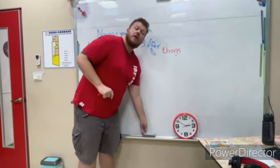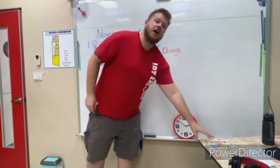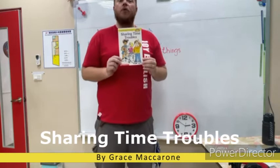So we have our three groups today. We have people, places, and things. And these are all of our nouns. Now what also is a noun is our book today. Our book today is Sharing Time Troubles. And you can see here it's by Grace Macaron. And in this book we're going to be reading about different nouns. And I wonder if you can find some more nouns inside this book.